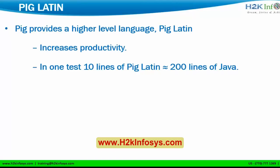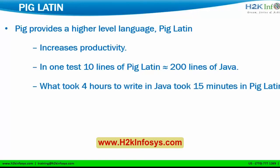Before, C and C++ were treated as low-level languages and Java as a high-level language. But these days Java is also getting considered a low-level language because so much coding is required even for small operations. Pig can be considered a high-level language compared to Java. Whatever took 4 hours to write in Java takes only 15 to 20 minutes to introduce the same functionality through Pig Latin.